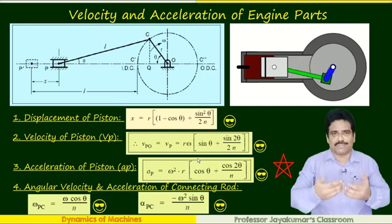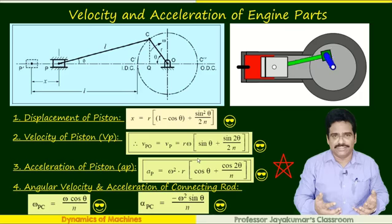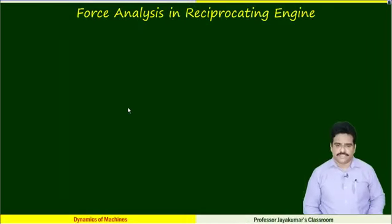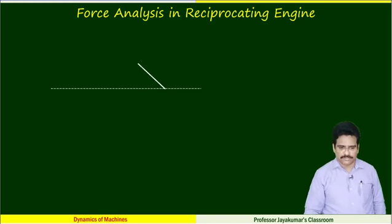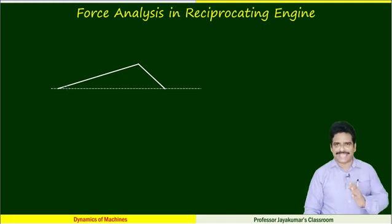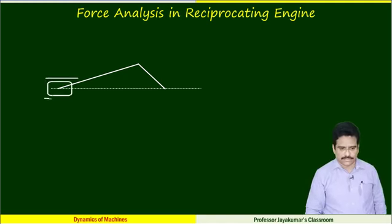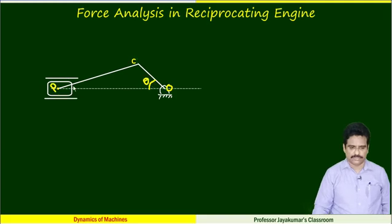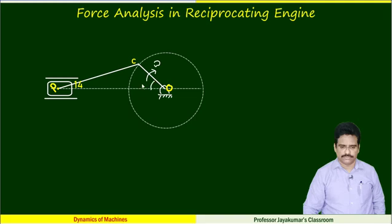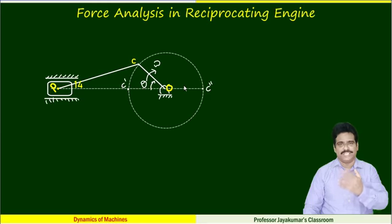Are you ready to derive all the expressions of various forces acting on an IC engine? Let us proceed. We will draw the configuration diagram of an IC engine. Let us draw the line of stroke. Arbitrarily, let us draw a crank and connecting rod. Let this be O, this C, and this be P. This is the configuration diagram of a reciprocating engine.